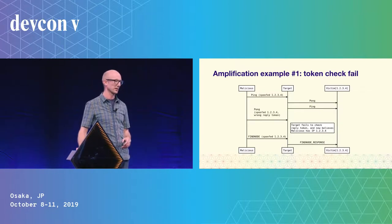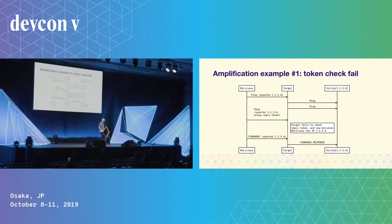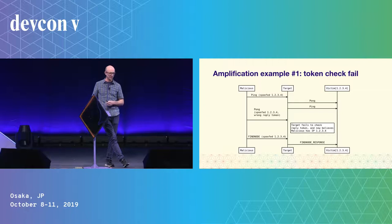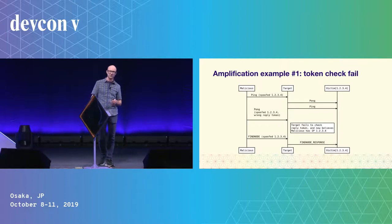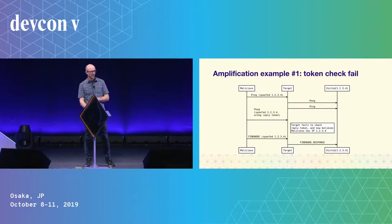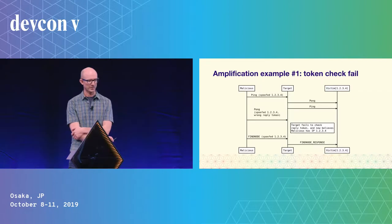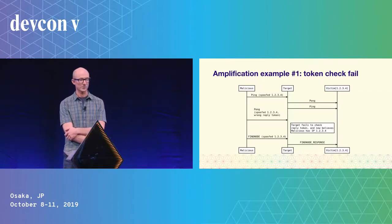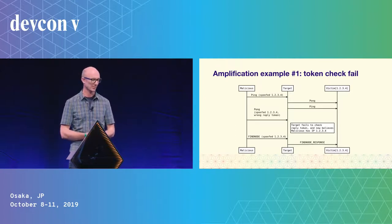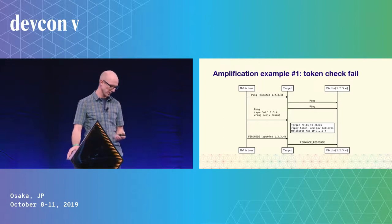Here is an amplification attack that Geth was susceptible to. A malicious node spoof-pinged the target; the target would reach out to the actual victim with a pong and a new ping. The malicious node sent back a pong pretending to have seen the first outgoing ping, and Geth didn't actually validate the reply token — so the target believed the malicious node resided at that IP address. If the malicious node then sent a find-node request of only 213 bytes, it caused a neighbors response of 1.5 kilobytes to be sent to the victim — an amplification factor of about seven, which is not trivial.